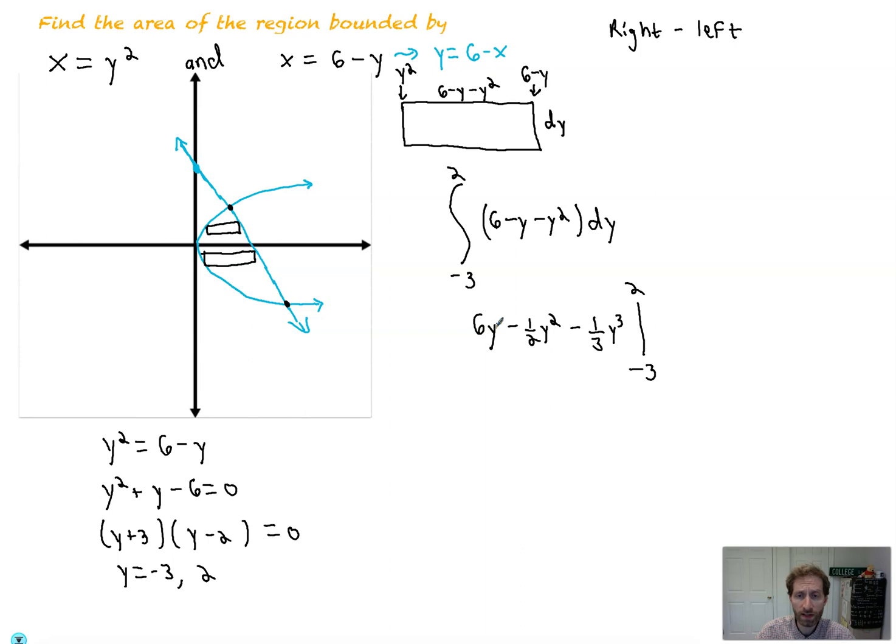And then we evaluate in our numbers. So I put in 2, I'm going to get 6 times 2 is 12. Then I'm going to get 1 half times 2 squared. I'm plugging in 2 into this. 2 squared is 4 times 1 half is 2. And then 2 cubed is 8 times minus 1 third is minus 8 thirds. So that's the whole first part.